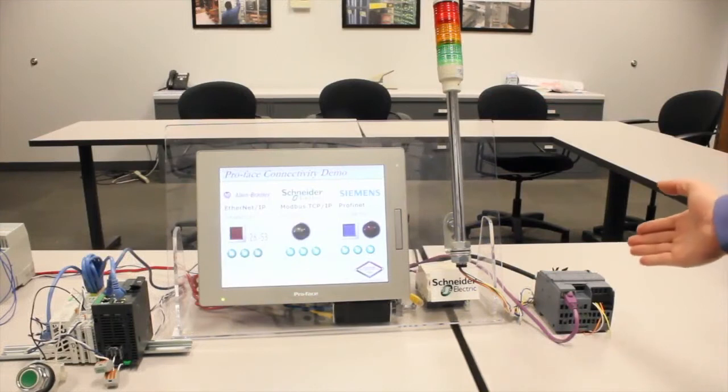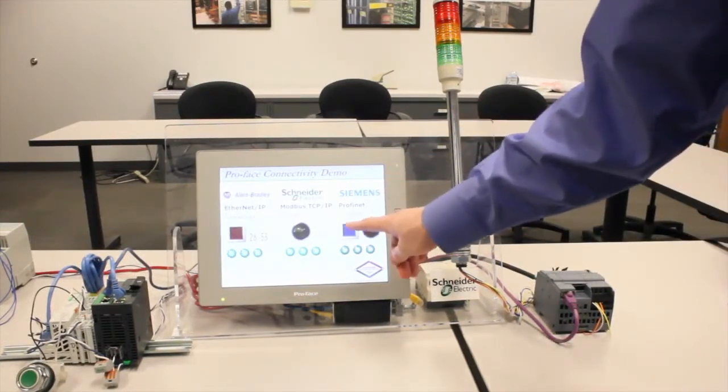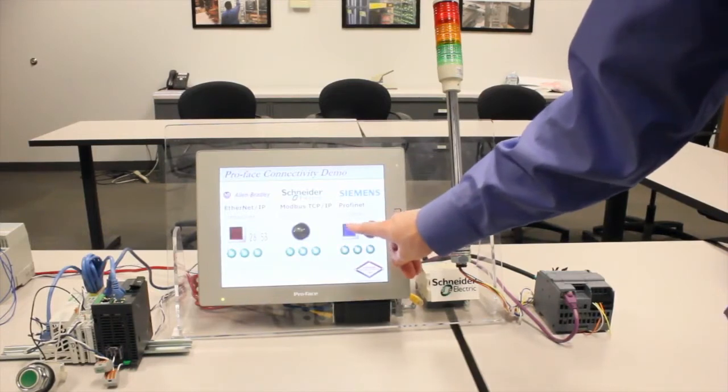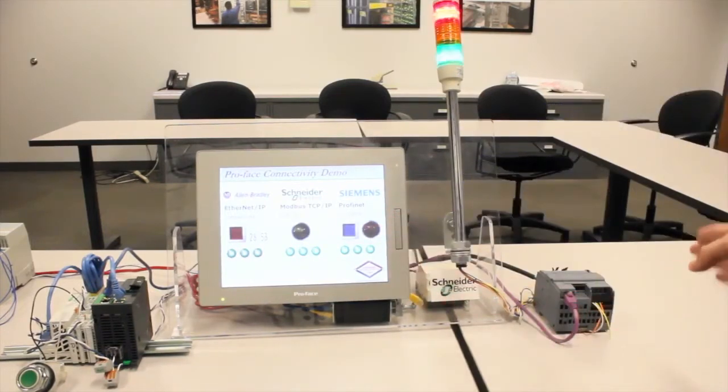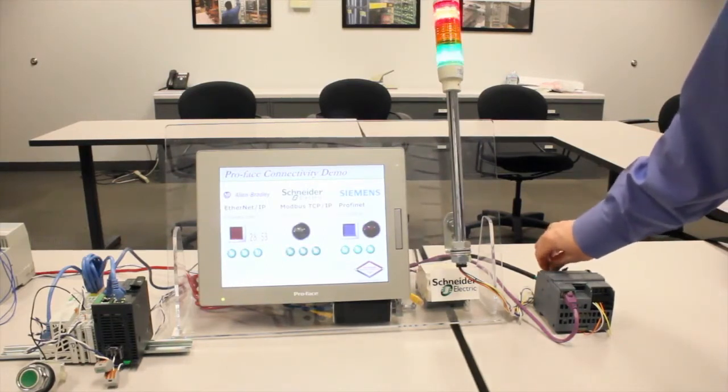For the Siemens S7-1200 connected over Profinet to the HMI, I have a button configured that will allow me to control the outputs. Once I press this, the outputs communicate to the stack light which turn on the green and red lights. In addition to that, as a physical input on the S7-1200, I have a switch that I can manipulate to turn on and off the yellow light.